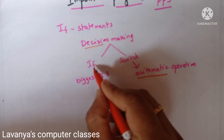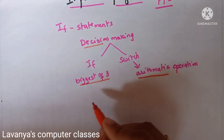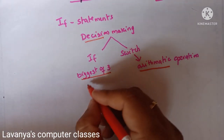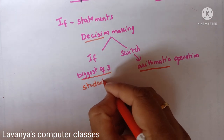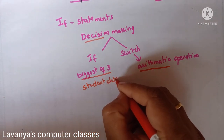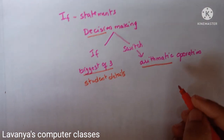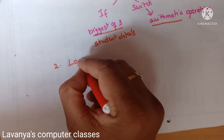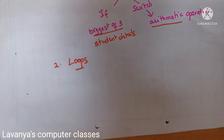In the if statement, important programs include: biggest of three numbers, finding whether a given number is even or odd, leap year or not — all of these are important programs. Student details are also important: take all the student details, calculate percentage, first class, second class, and distinction.